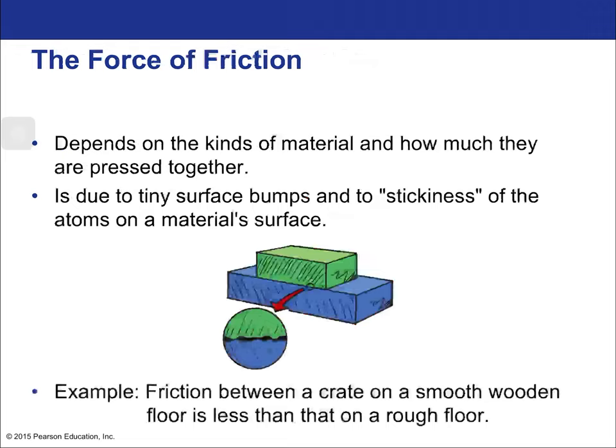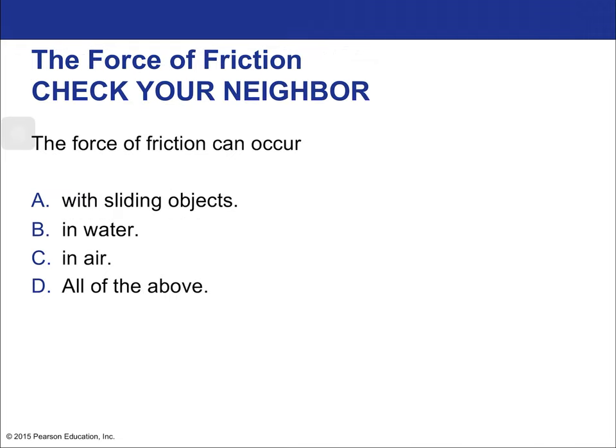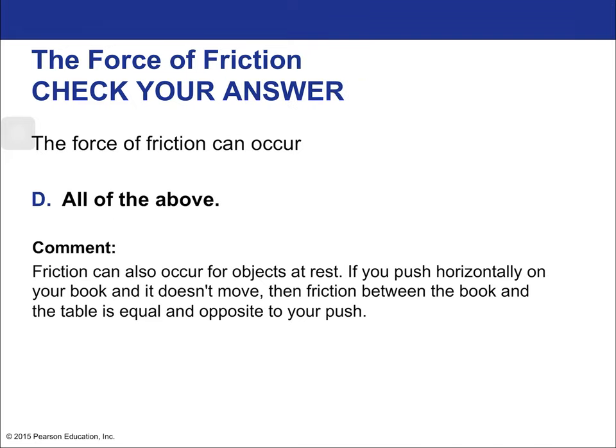The force of friction can occur with sliding objects, in water, and in air — all of the above. Air resistance is a kind of friction, water drag is a kind of friction, and sliding one object across another is another form. The principle is the same: microscopic-scale interactions between substances, even if the substance is a fluid like a gas or a liquid.